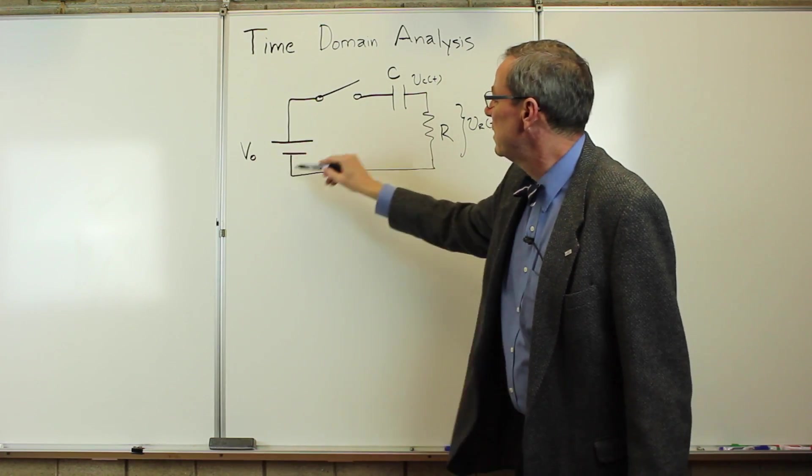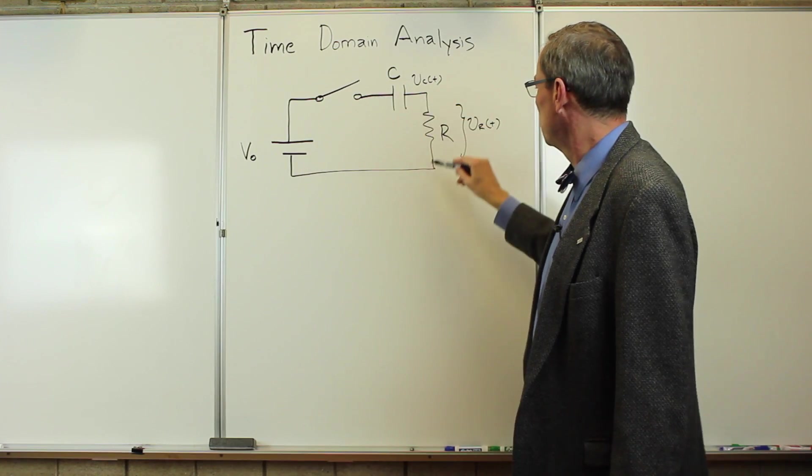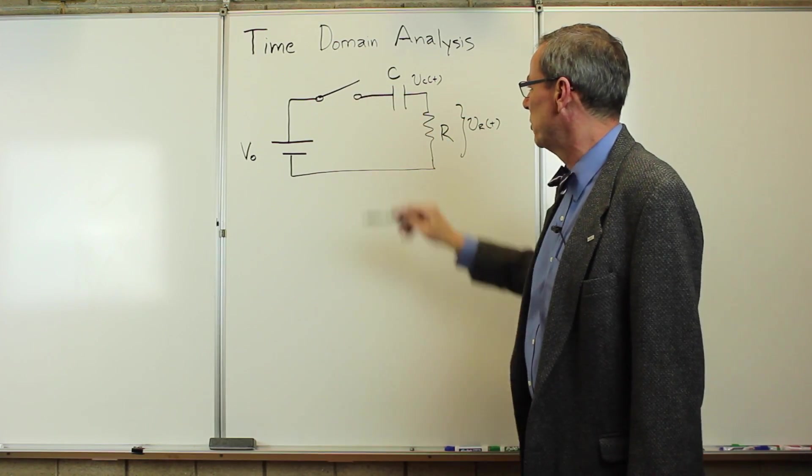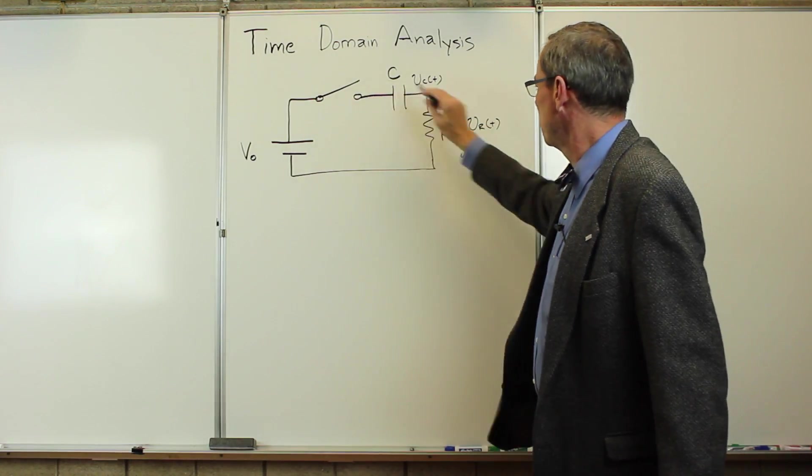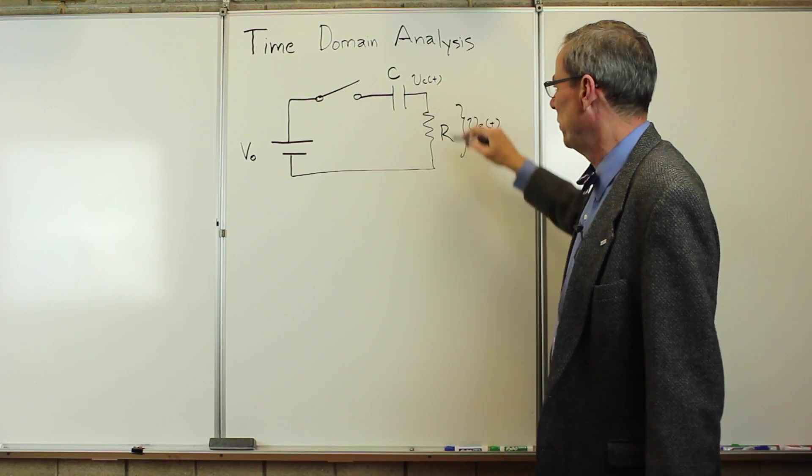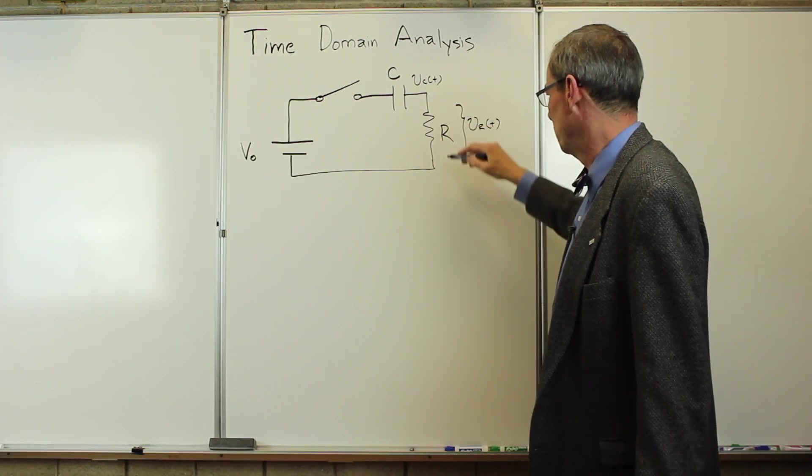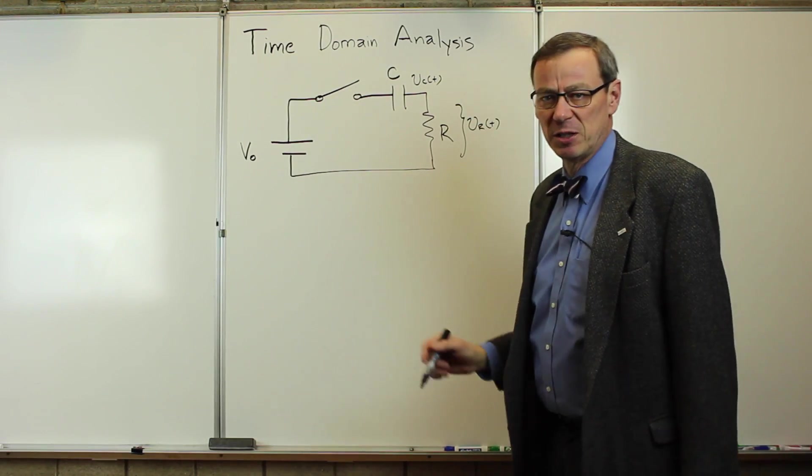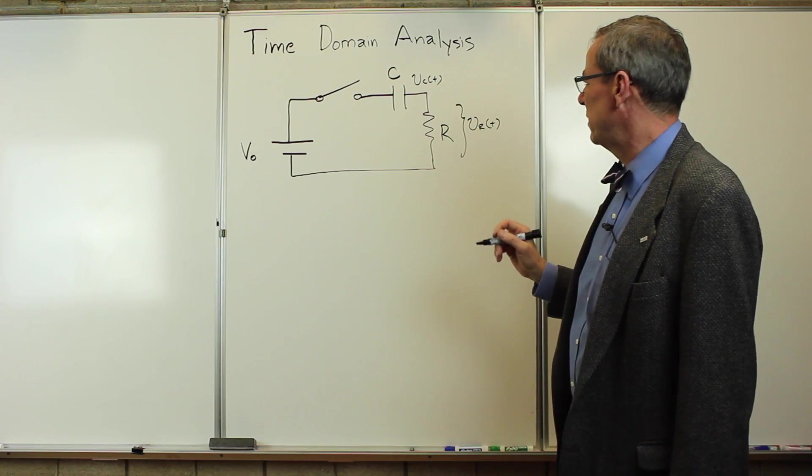The idea is we have a DC power supply connected through a switch to this circuit, and at time t equals zero, we close this switch, so current starts flowing through these two components. And the voltages will then build up or drop off as a function of time as that current flows through. So let's look at how we would do this.